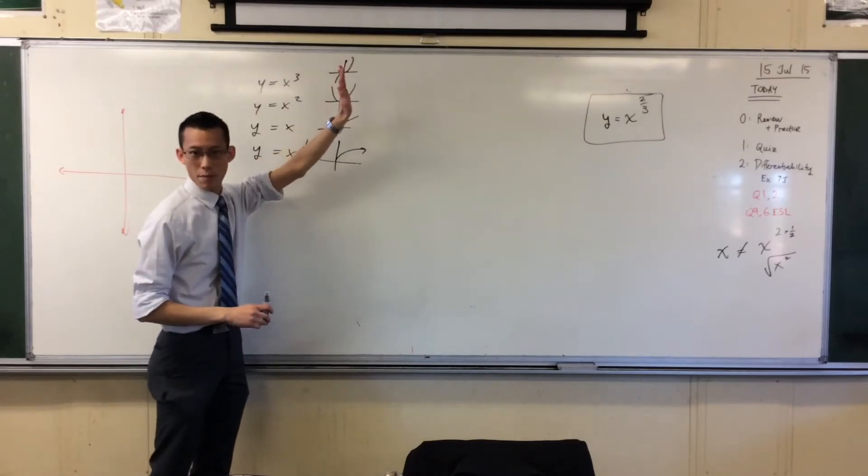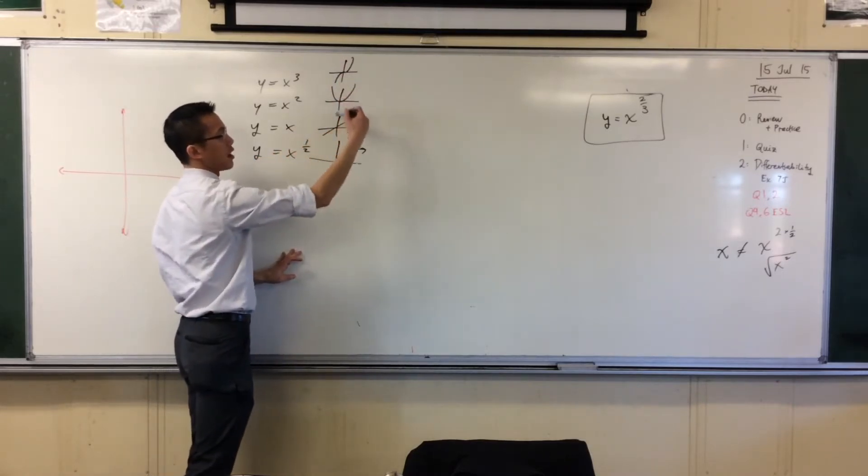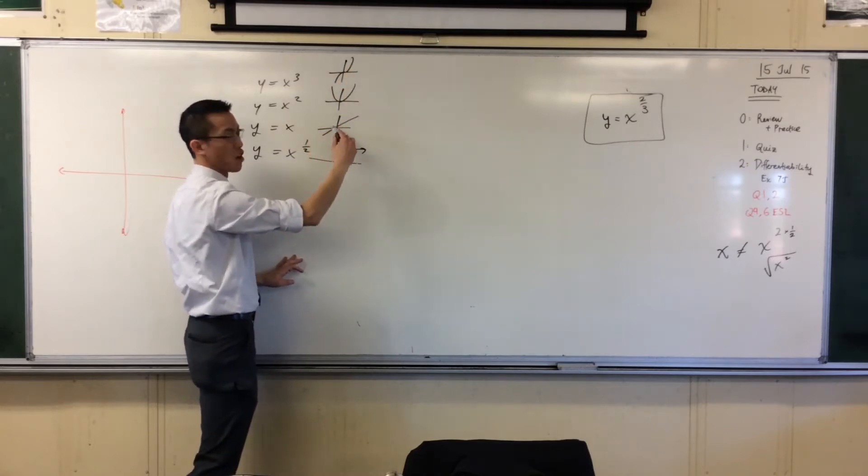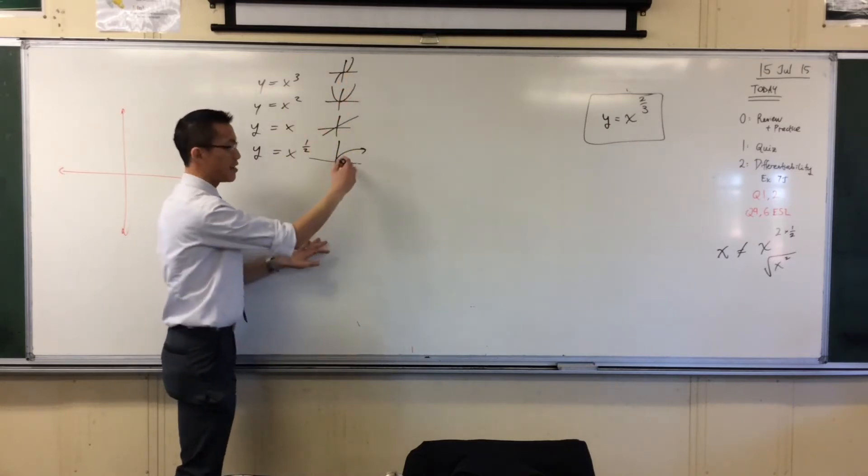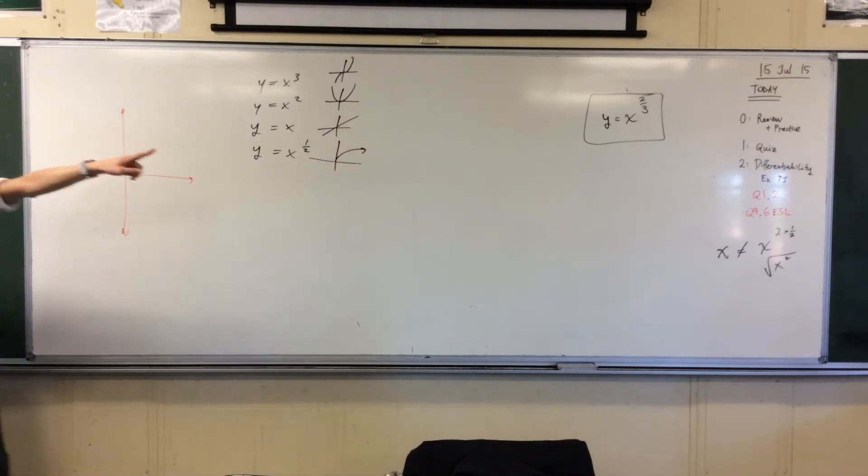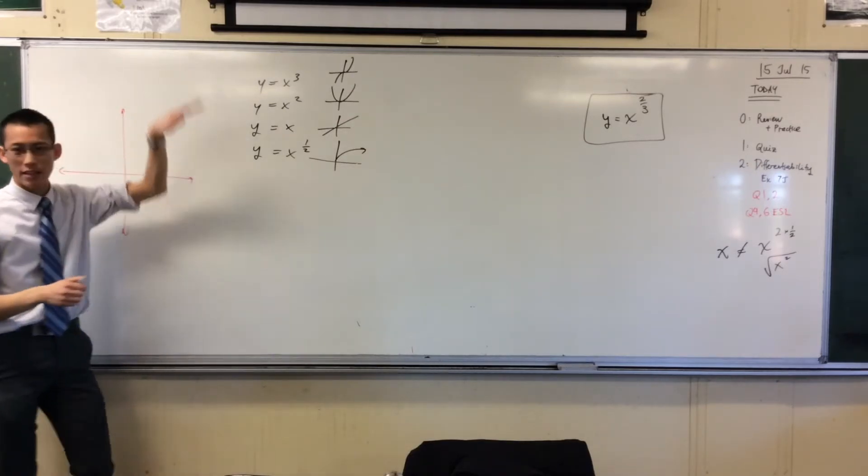Just have a look at your first quadrant for a minute, okay? It goes steepest, steep, not really steep, it's just a straight line, and then this is shallow, right? So I am guessing, like, this is x to the power of two thirds. Where does this fit in the scheme?